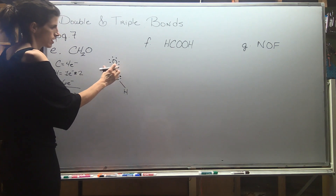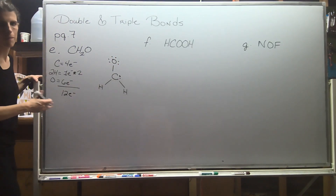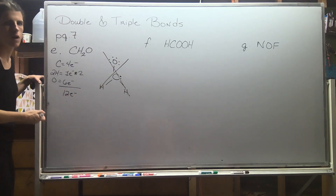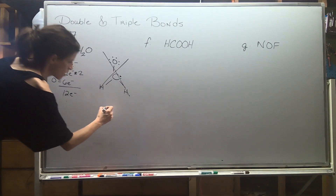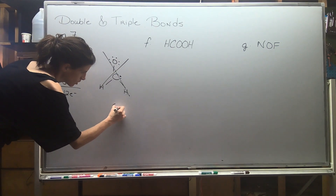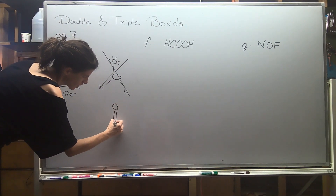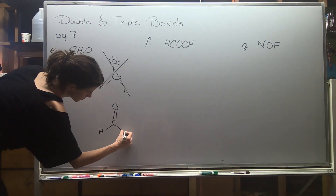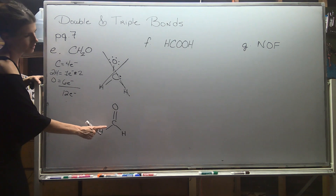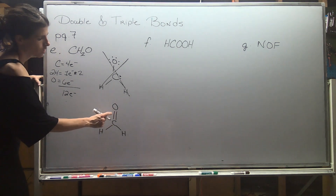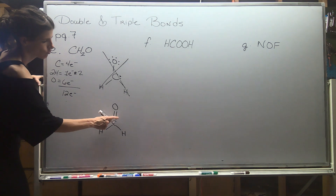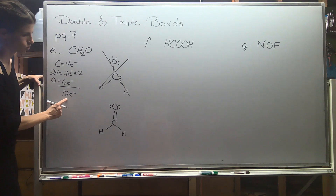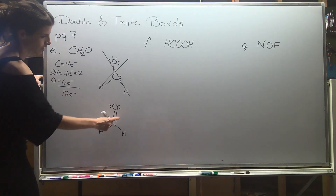Once octets are satisfied, go back and check the total: two, four, six, eight, ten, twelve, fourteen. We used too many electrons — which means we probably need a double bond. The only place for the double bond is between oxygen and carbon, since hydrogen can never ever do a double bond. With the double bond, carbon has two, four, six, eight — good. Oxygen now has two, four, and I'll add lone pairs for six and eight. Checking the total: two, four, six, eight, ten, twelve — correct.